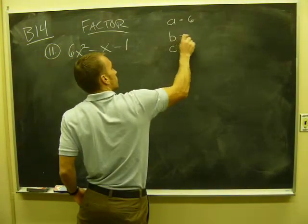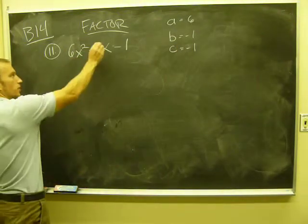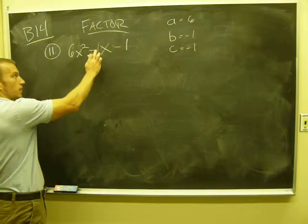A is 6, b's negative 1, c's negative 1. All right, there's no number by the x. If you want, you can put a 1 there. Negative x and negative 1x are the same thing.